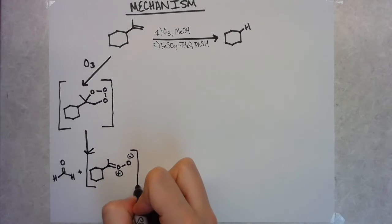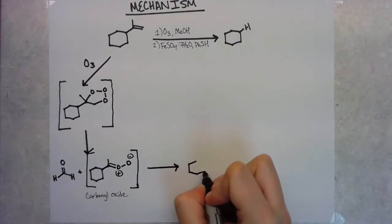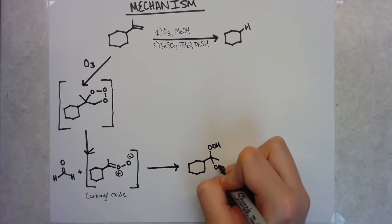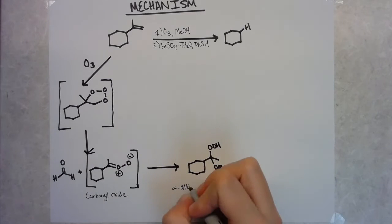But the difference here is that if this reaction is done in the presence of an alcohol, that alcohol can act as a nucleophile to the electrophilic carbonyl oxide and can form this intermediate known as an alpha-alkoxy hydroperoxide.